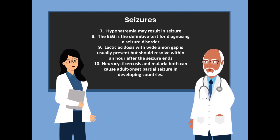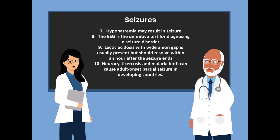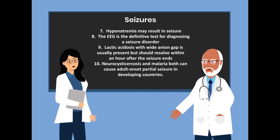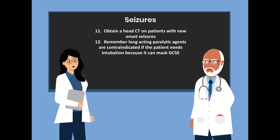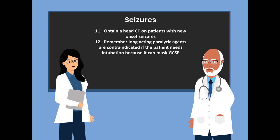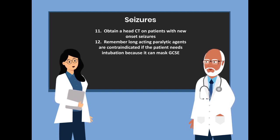Number 9: lactic acidosis with wide anion gap is usually present but should resolve within an hour after the seizure ends. Number 10: neurocysticercosis and malaria both cause adult onset partial seizures in developing countries. Number 11: obtain a head CT on patients with new onset seizures. Number 12: remember, long-acting paralytic agents are contraindicated if the patient needs intubation because they can mask generalized convulsive status epilepticus.